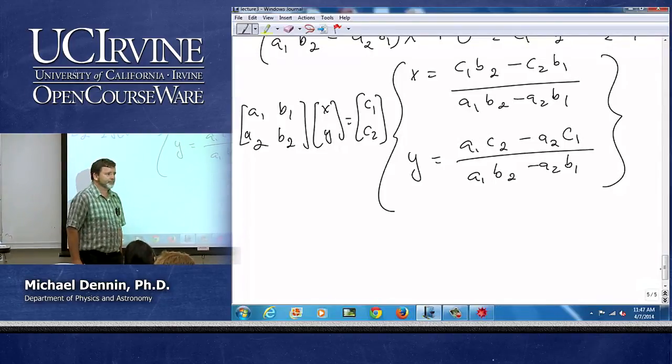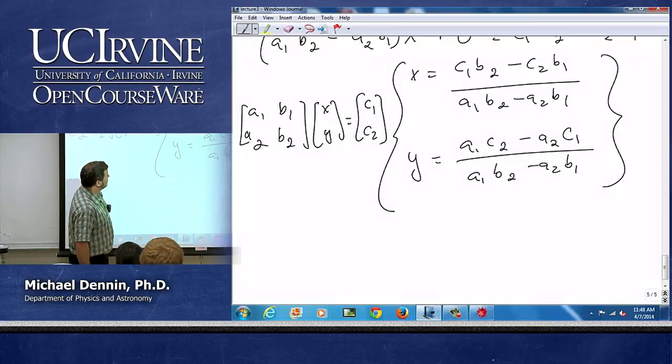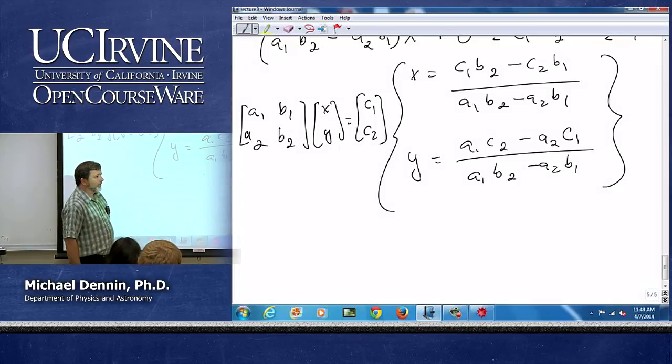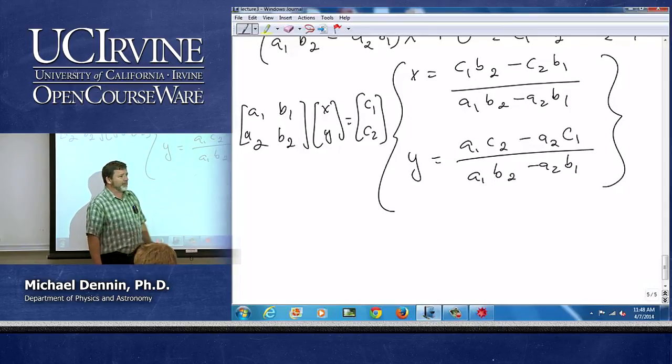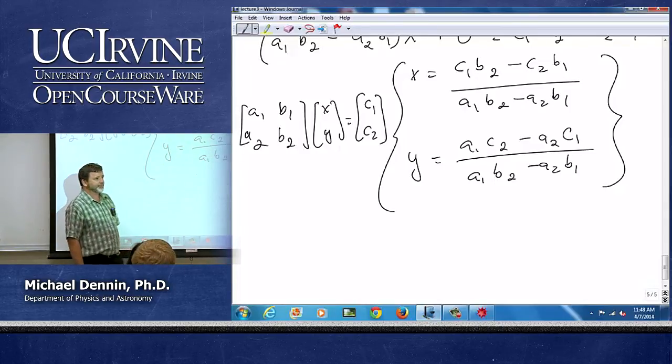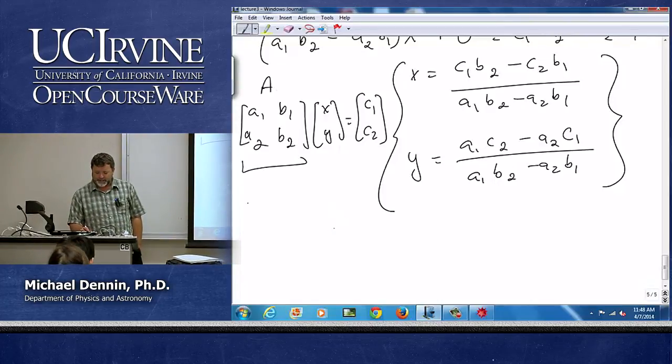If you substitute c1 and c2 for a1, a2, then you get the first point, you can't do it. Well, that's partly true, but what do I immediately notice about my denominators? It's the determinant of A, this matrix. If I call that A, the denominator is the determinant of A.